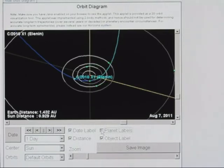You can turn off the planet labels if you want. You can turn off the date label in the corner here, but I think the date label is the important thing to pay attention to. And you can zoom.